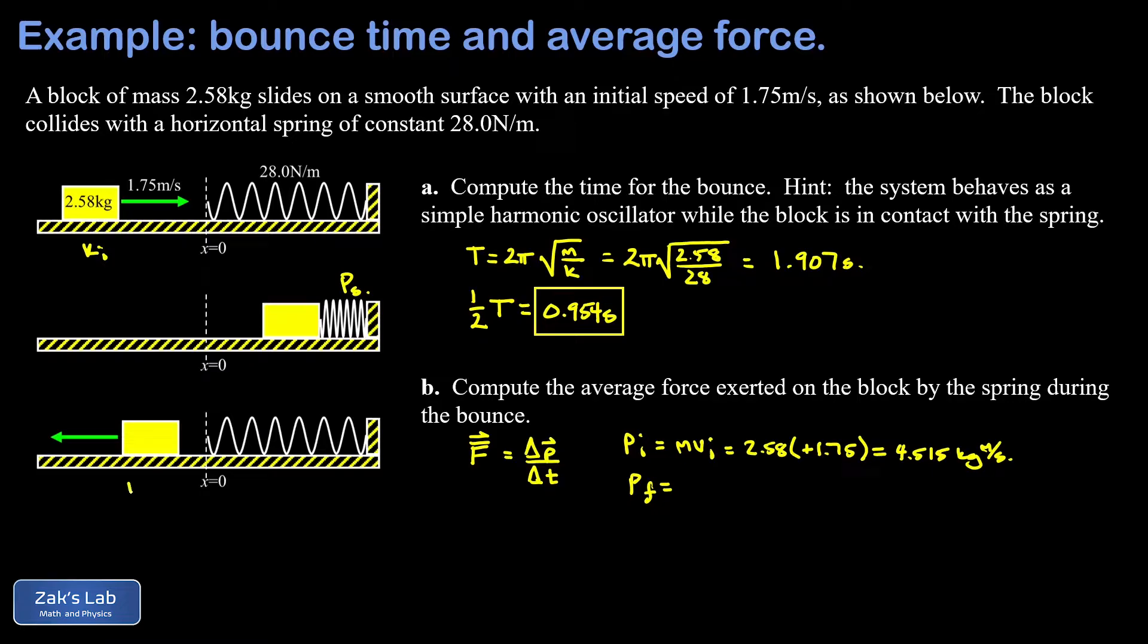If energy is conserved then the final kinetic energy must be equal to the initial, and since it's the same mass for the block it means it has to have the same speed. So we immediately find out that the block is returning to the left at the exact same speed it originally approached the spring.